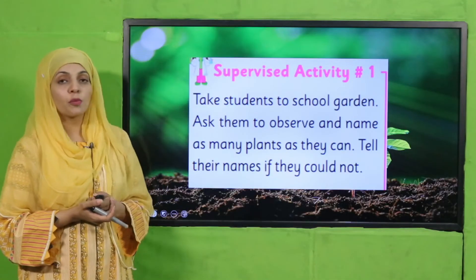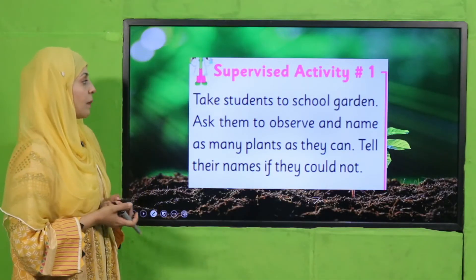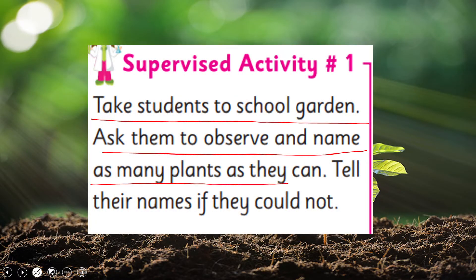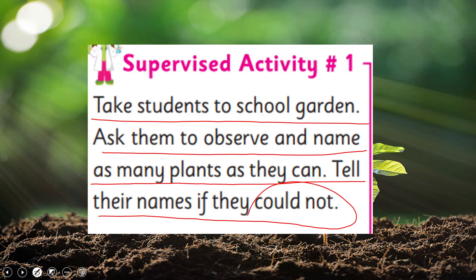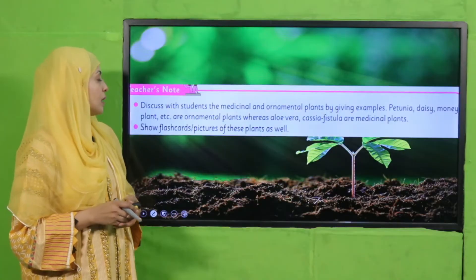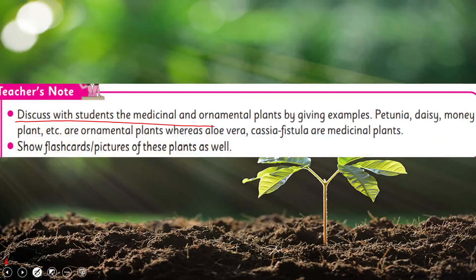Now is the time for supervised activity. Supervised Activity Number One: take students to the school garden, ask them to observe and name as many plants as they can — tell their names if they could not. As an activity, after the lecture, teachers should take students to the garden and ask them to observe plants aur unko kitne plants ke names aate hain. If they do not know, it is okay — aap unko help out karein with the names.